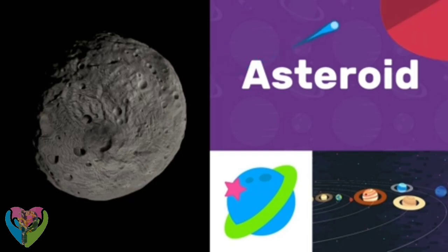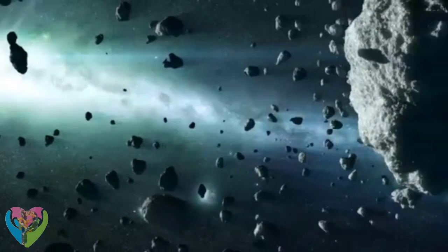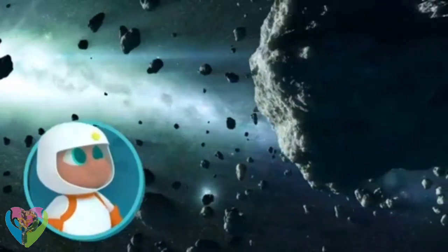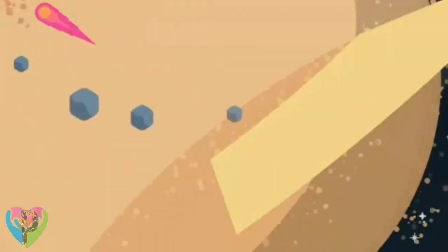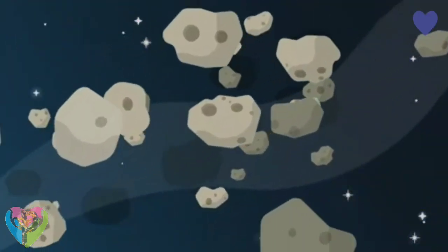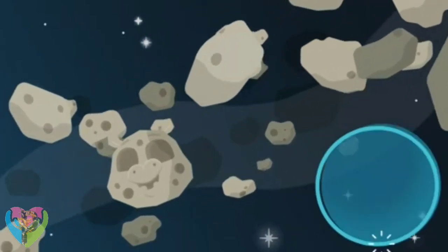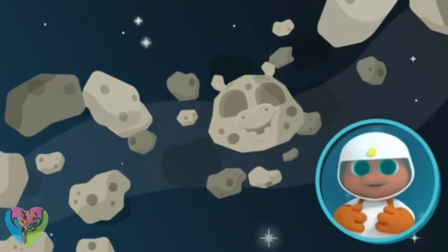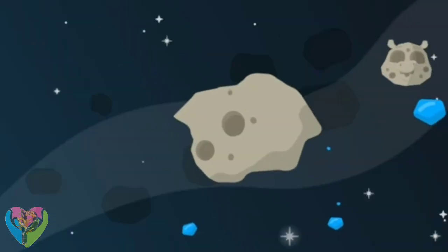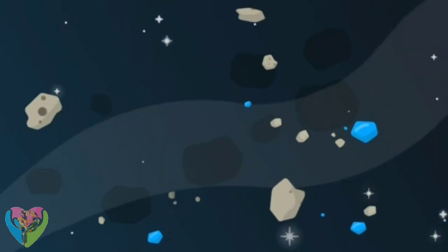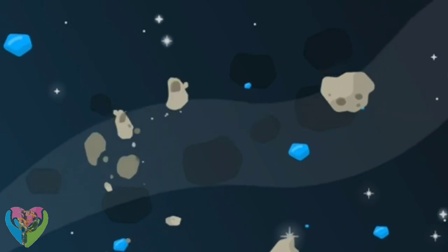Asteroid! Asteroids are rocks floating in space. I've never seen an asteroid before! Asteroids come in all shapes and sizes, some as small as a hippo. Like me! But where do they come from? Scientists think asteroids are just leftover pieces from when the solar system was first created.